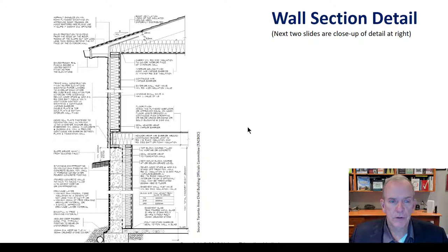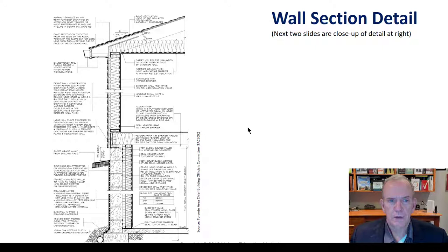These next few slides are from TACBOC — the Toronto Area Chief Building Officials Committee — who put together a listing of standard details interpreted from the Ontario Building Code. The most recent ones are from the 2012 Building Code; there have been updates since, but it's a really good indicator of what you're looking at and what you're trying to understand from the information.